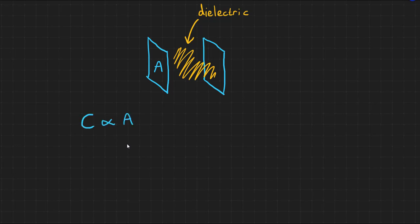What would affect the strength of the electric field between the plates? Well, we know that the electric field strength between parallel plates is inversely proportional to the separation of the plates. So therefore the capacitance must also be inversely proportional to this separation.